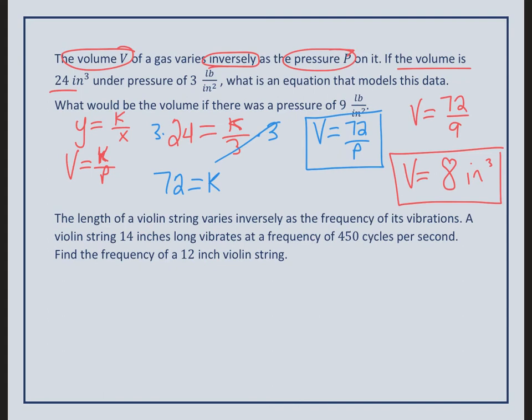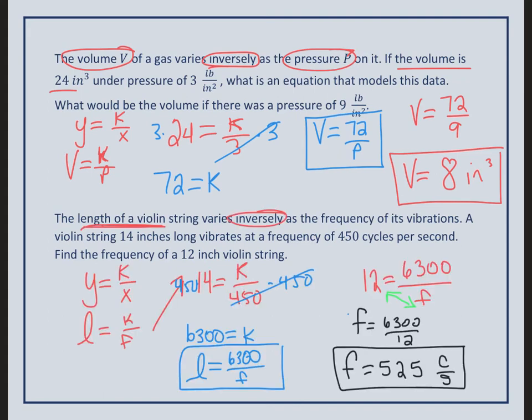Go ahead and pause this video. Try the real world example number 2 and see how you do. Check how you did. Now I'm hoping that you guys got to the 6,300 without any issues. Now this is where it got kind of tricky. This time, they didn't give you the denominator. They didn't give you the frequency. They gave you the length of the violin string. So if you made a mistake, it was probably mixing these two numbers up. So it was 12 equals 6,300 over F. So solve for F, and you have 6,300 over 12, and your answer is 525.